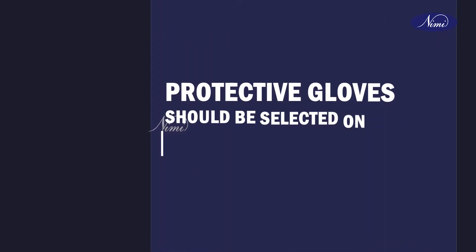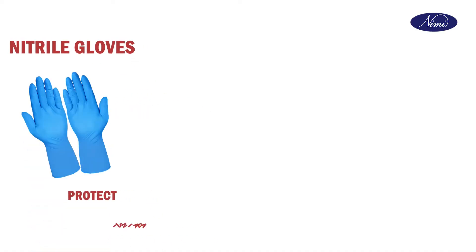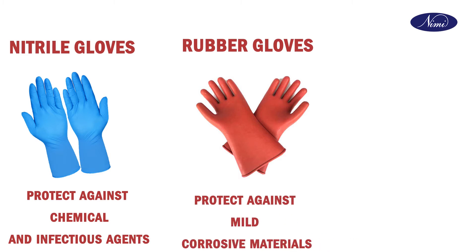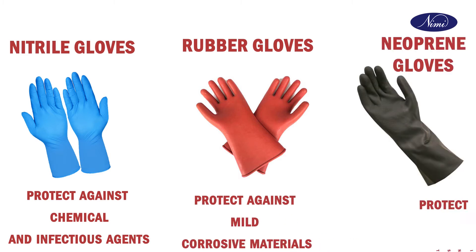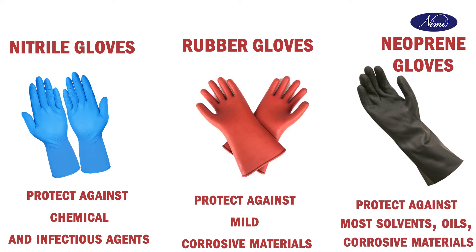Protective gloves should be selected on the basis of the hazards involved. For example, nitrile gloves protect against most chemicals and infectious agents. Rubber gloves protect against mild corrosive material. Neoprene gloves protect against most solvents, oils, and mild corrosive materials.